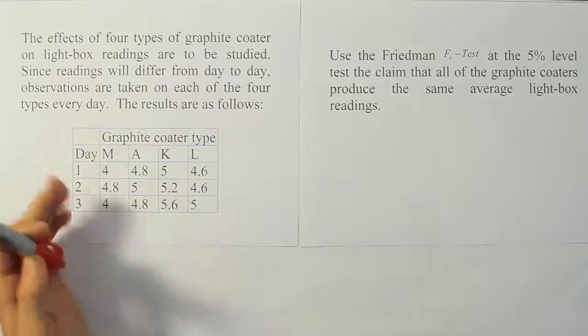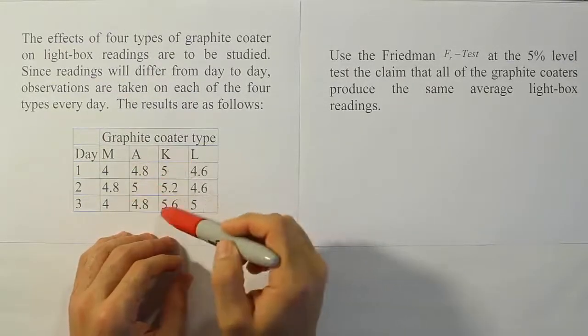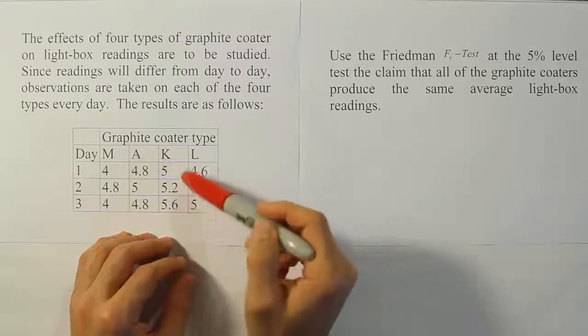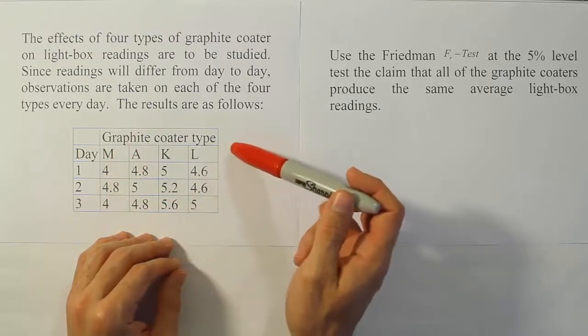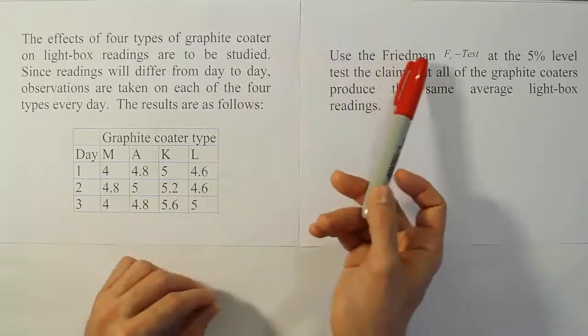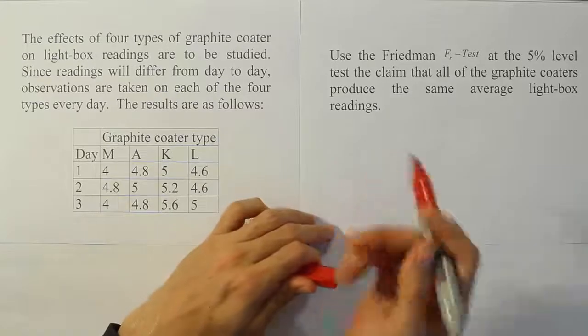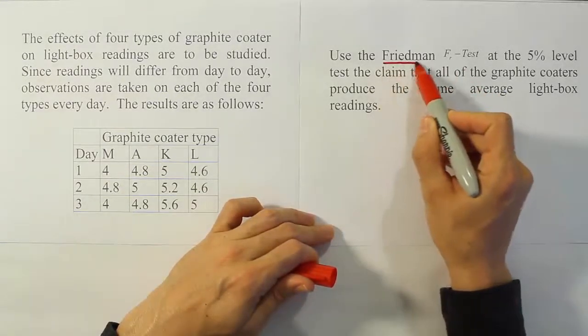So we have the graphite coater type and the days, right? It looks like a randomized block design layout if you look at it carefully. We have a nonparametric procedure to handle data like this, and we don't want to use the ANOVA randomized block design procedure. When you look here, it says use the Friedman FR test, and that's the equivalent procedure that basically is our nonparametric version of randomized block design.